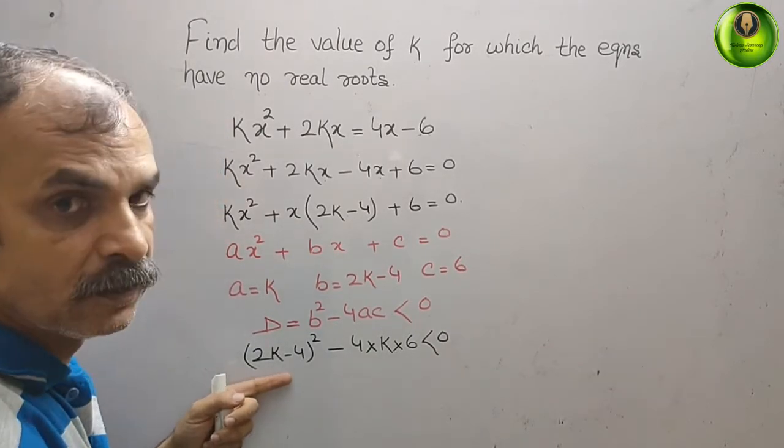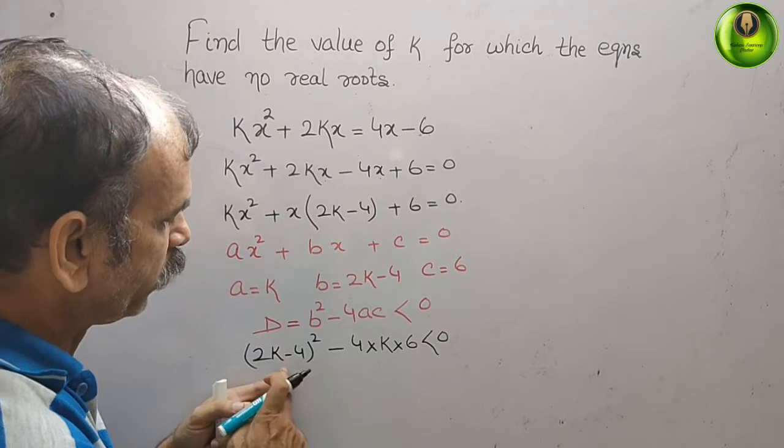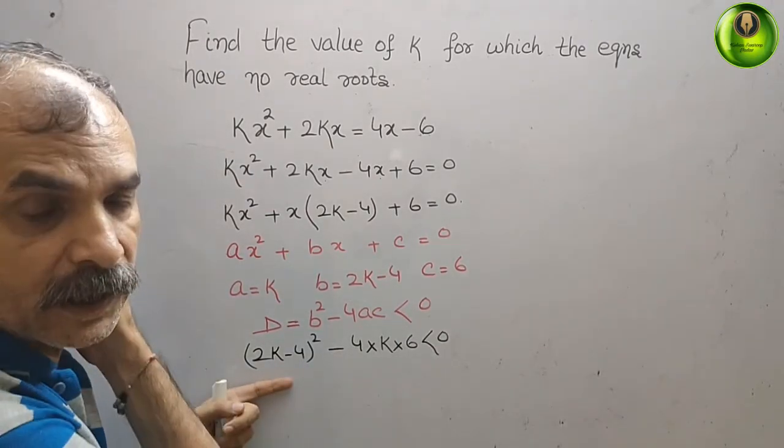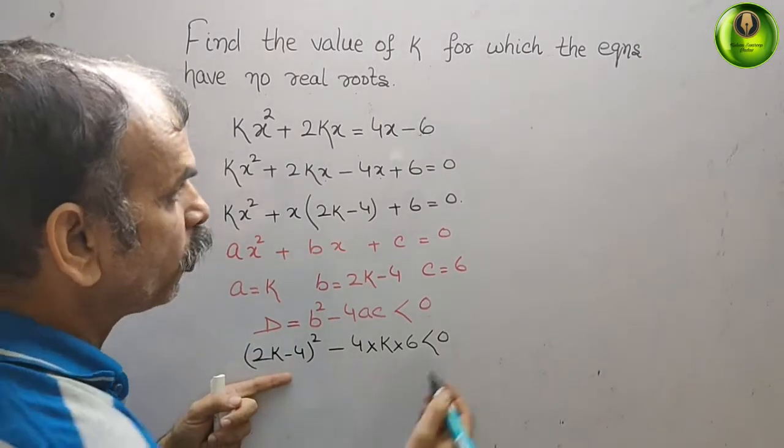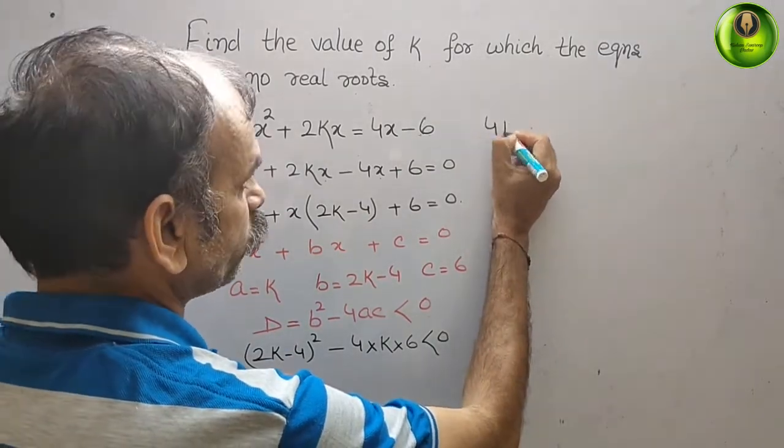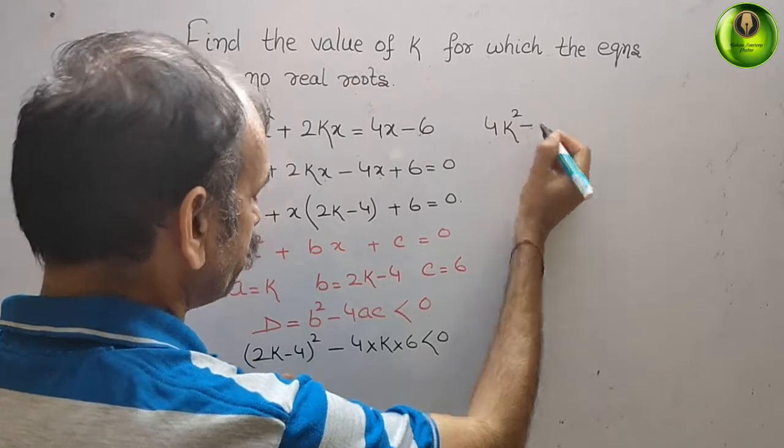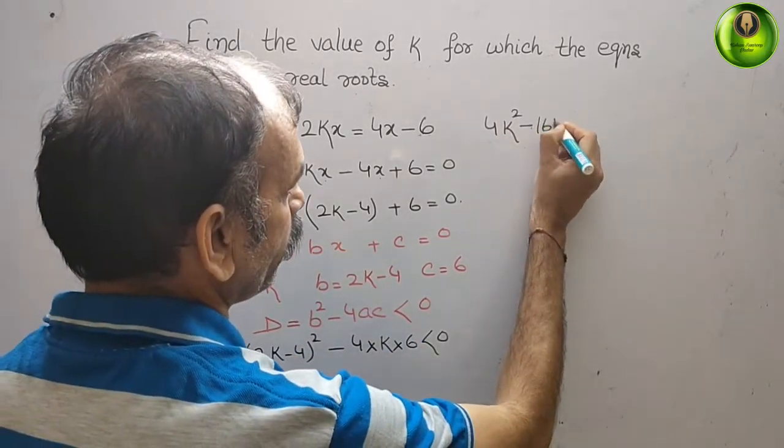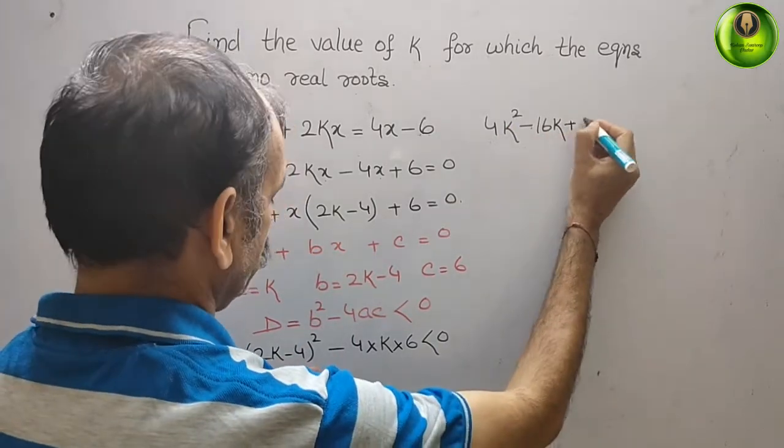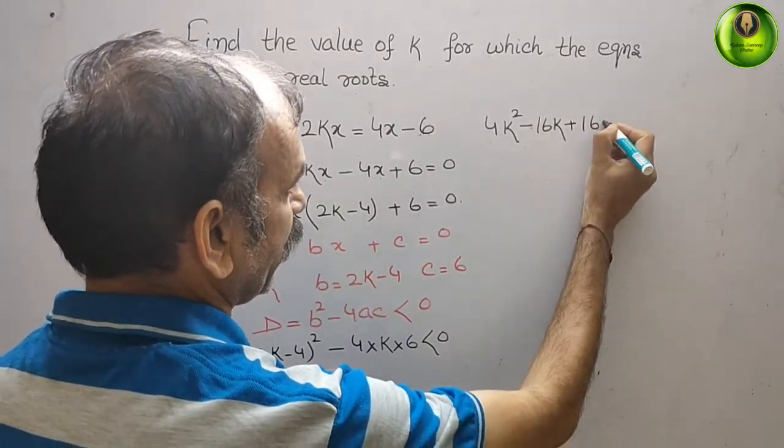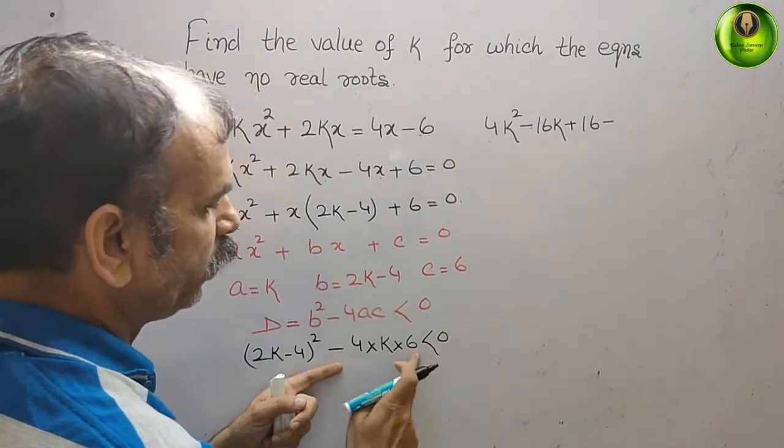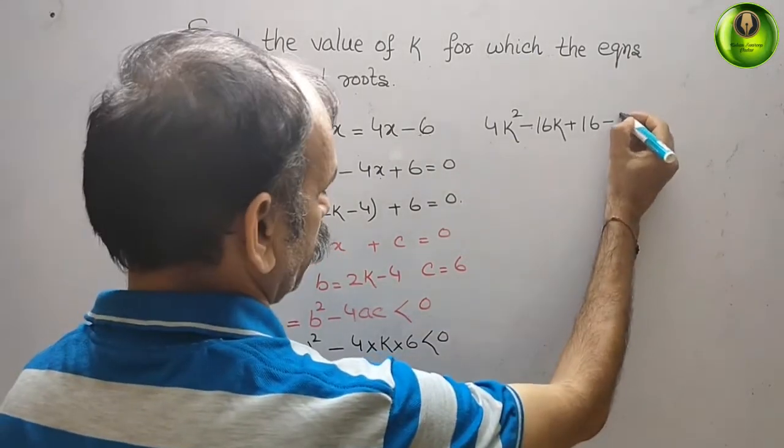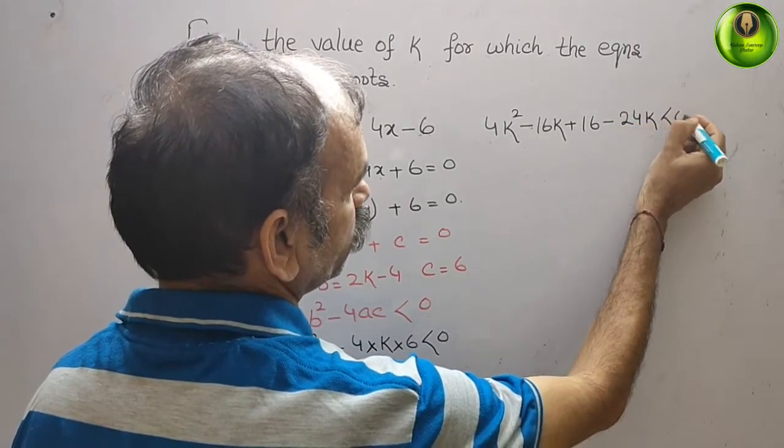Now write this. (2k - 4)² is 4k² - 16k + 16 minus 4 times 6 is 24k, less than 0.